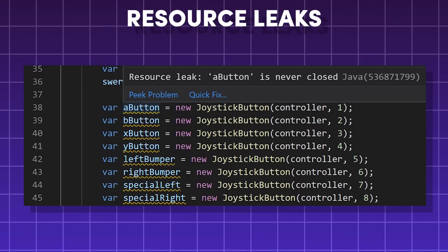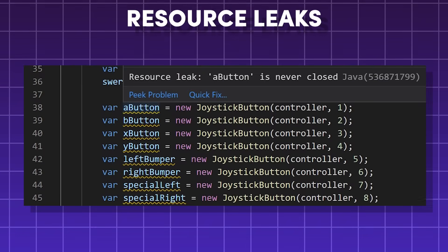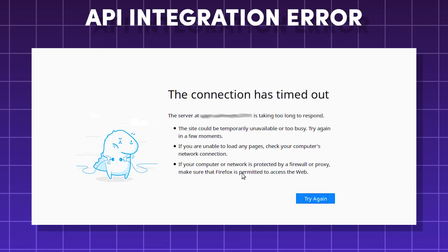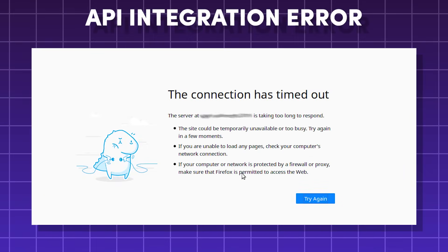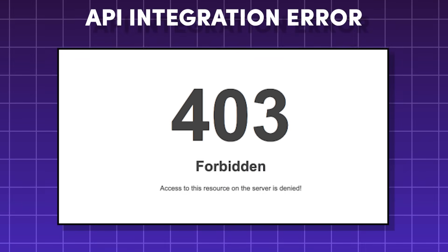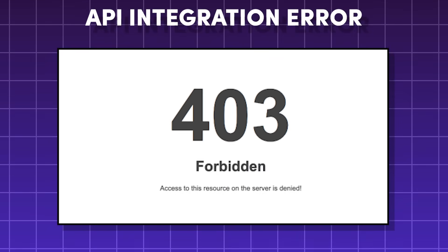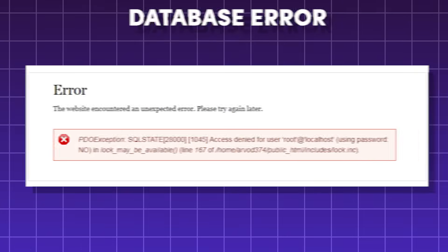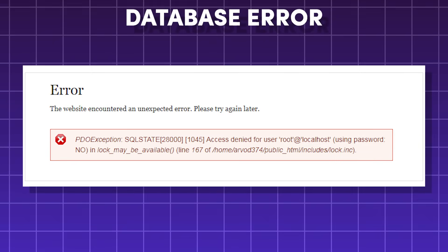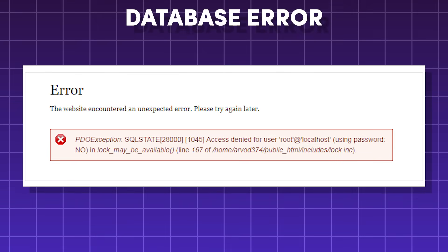Resource leaks can involve database connections, file handling, or network sockets. API integration errors consist of network timeouts, incorrect HTTP status codes, or sending a malformed request. Database errors could be caused by bad SQL syntax or too many open connections.